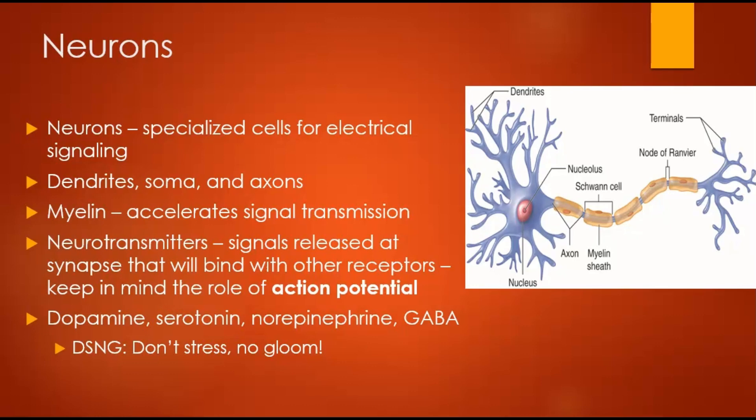An important concept is the action potential — an electrical impulse that travels down the neuron. In its resting state, it is ready to fire. If the signal is strong enough, it triggers the neuron to fire, causing a spike that travels down the axon, similar to a domino effect. It is an all-or-nothing response: the neuron either fires at full strength or not at all. The synapse is where neurons meet.